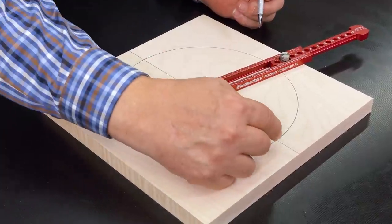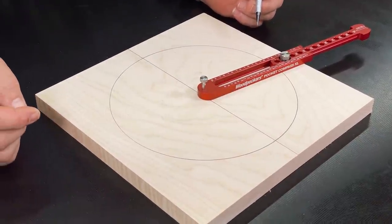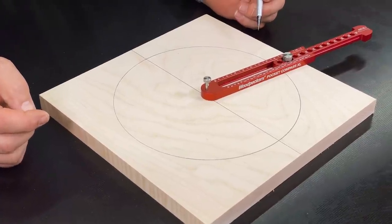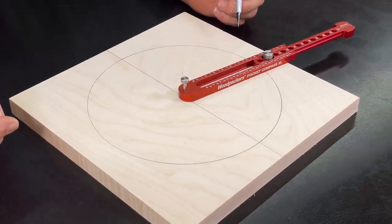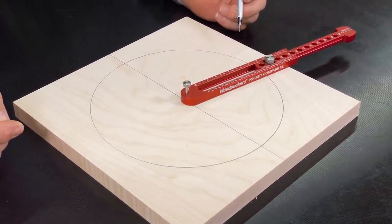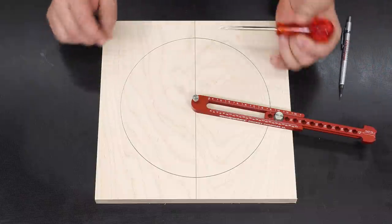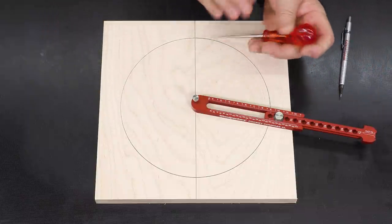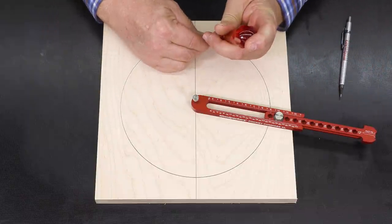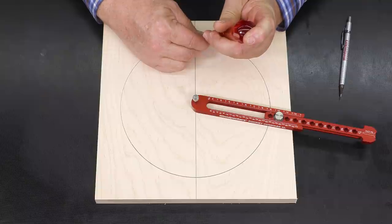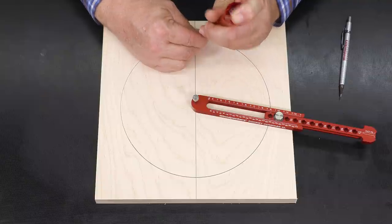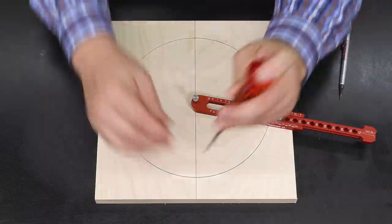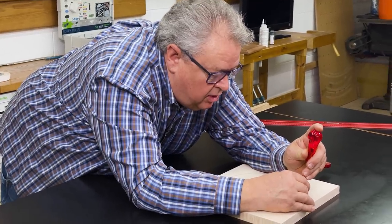Okay so there is the circle. We have 12 o'clock and six o'clock set up. Now the next thing that we need to do is find three o'clock and nine o'clock. So what we're going to do is we're going to come to noon and six and we're going to mark those points with our awl.